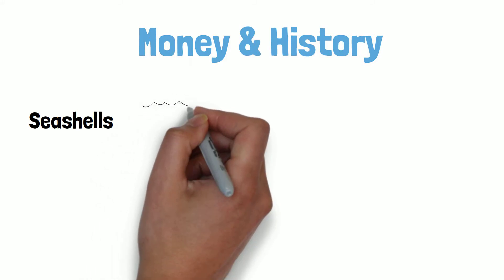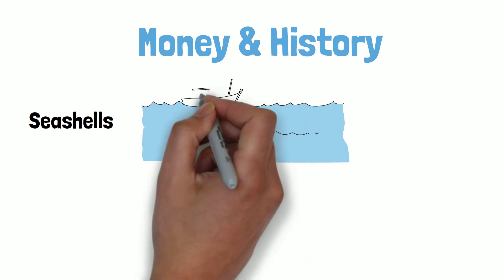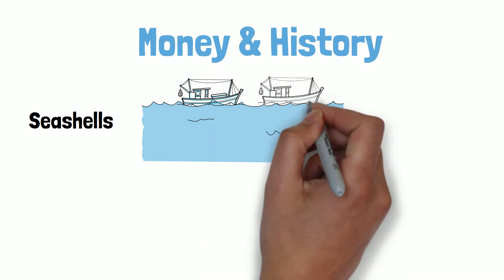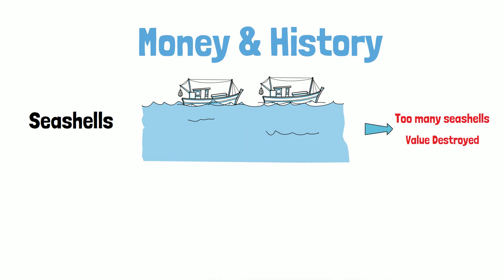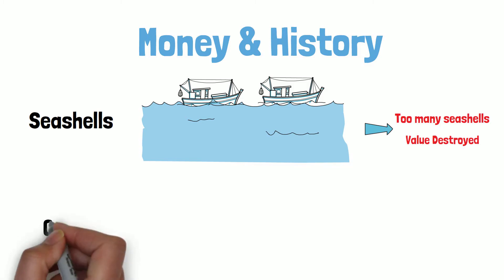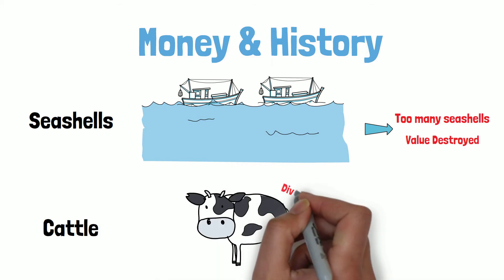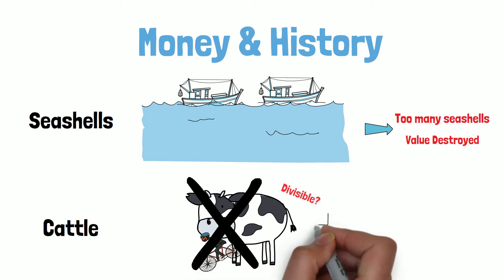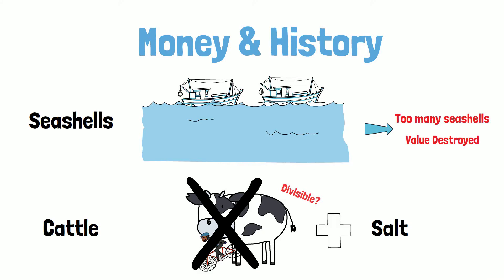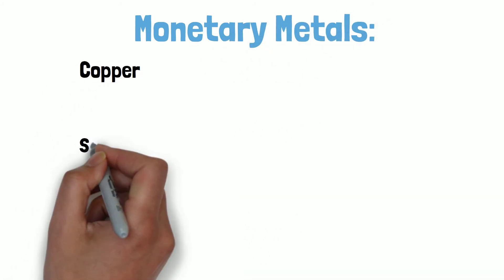To understand the stock-to-flow ratio further, we can look at goods used as money throughout human history. Seashells were used as currency throughout Africa and Asia for over 3,000 years, but humans developed advanced boats and technologies for harvesting them, so supply increased and value was destroyed. We used cattle as money, but they are big, bulky, not easily divisible, and difficult to travel with — not saleable across space or scales. We also used salt, and later advancements in metallurgy allowed us to begin using monetary metals: copper, silver, and gold.